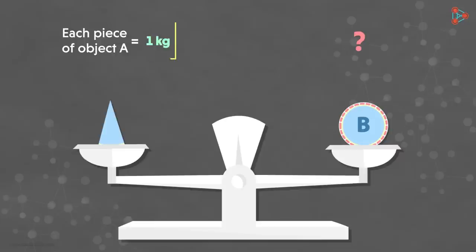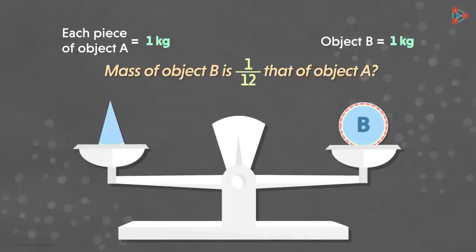Now can we tell the weight of object B? Yes, each piece of object A here is 1 kilogram. And hence we can say that object B also weighs 1 kilogram. Let me ask you something now. Can we say that the mass of object B is 1 twelfth that of object A? That's correct! This is exactly how we estimate the atomic mass of an atom.